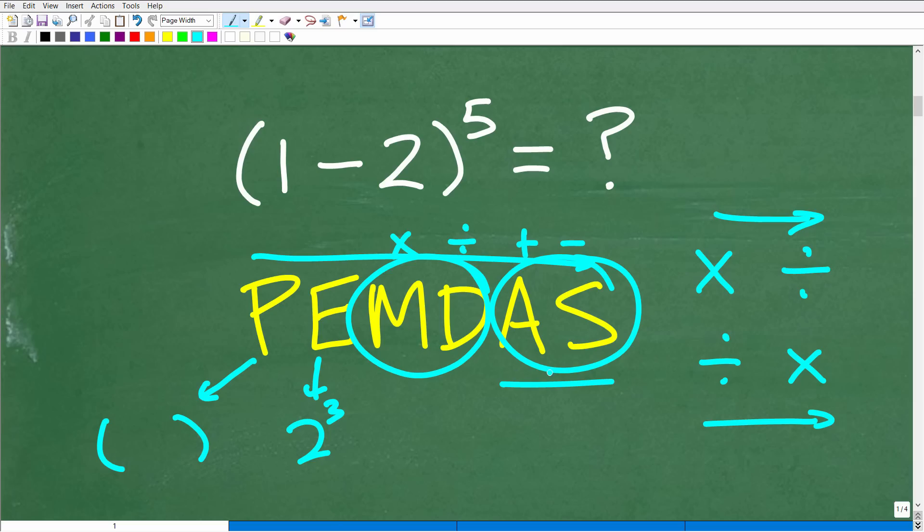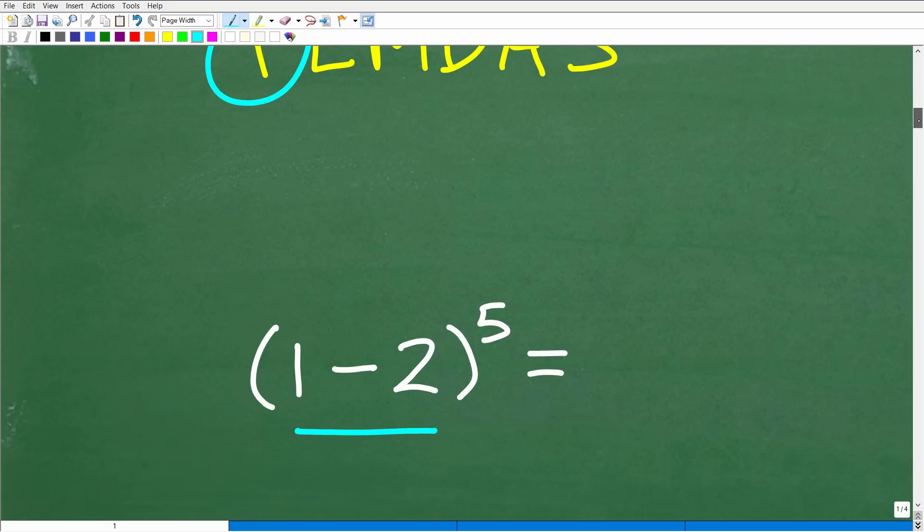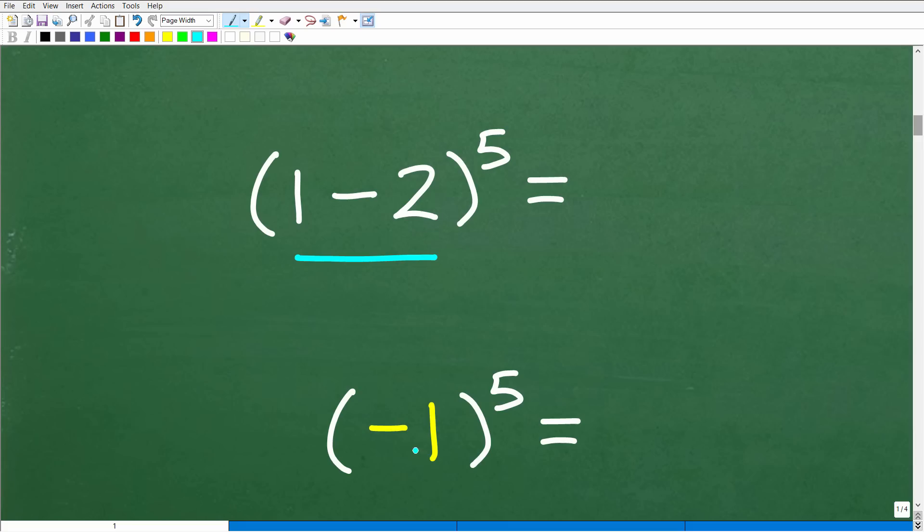All right, okay, so now that we understand the order of operations, we can look at this problem and kind of ask ourselves, what do we need to do first? So we just go right to the P and say, do we have parentheses? Well, of course we do. So we have to go inside those parentheses and work on that first. So we have 1 minus 2. That's what we're going to have to figure out. So 1 minus 2, what is that equal to? Well, if you didn't come up with a negative 1, if you wrote 1, if your answer was a positive 1, it's possible this is where you made your mistake.